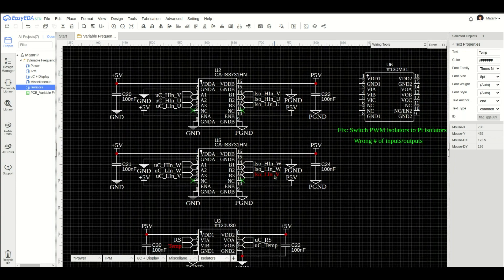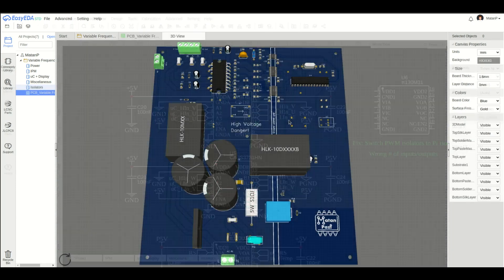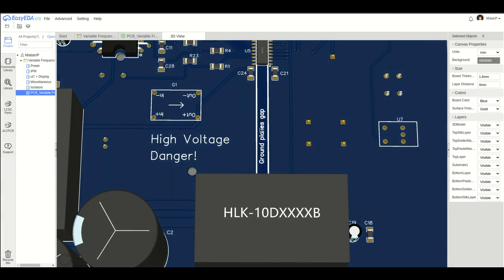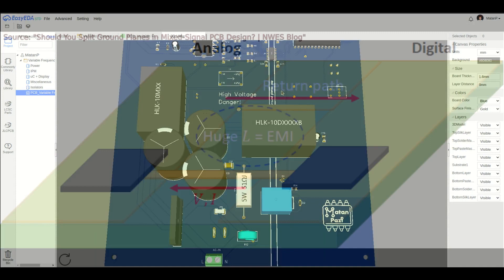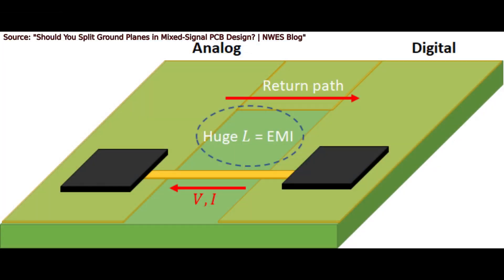Let's finish with a few notes regarding the layout. Apparently, there's a lot of drama regarding splitting ground planes. From what I understood, as long as I didn't pass any traces between the separated planes, which would generate a lot of unpredicted EMI, and only pass signals through isolators, it shouldn't be an issue.